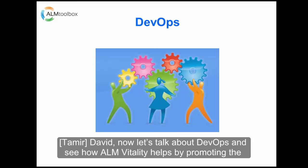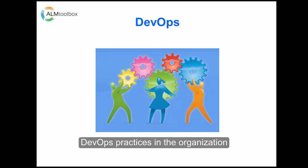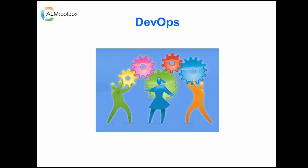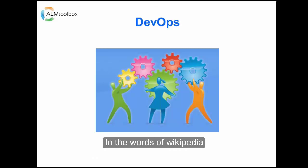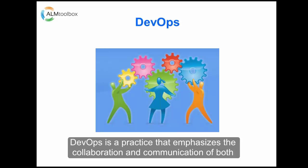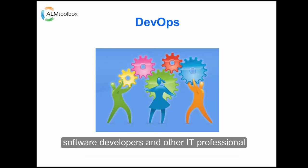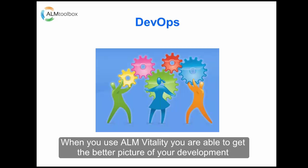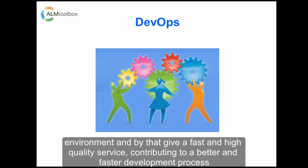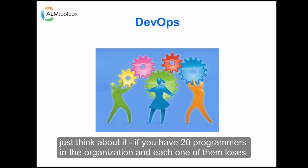Now let's talk about DevOps and see how ALM Vitality helps by promoting DevOps practices in the organization. First, in the words of Wikipedia, DevOps is a practice that emphasizes the collaboration and communication of both software developers and IT professionals while automating the process of software delivery. When you use ALM Vitality, you are able to get a better picture of your development environment and by that give fast and high quality service, contributing to a better and faster development process.